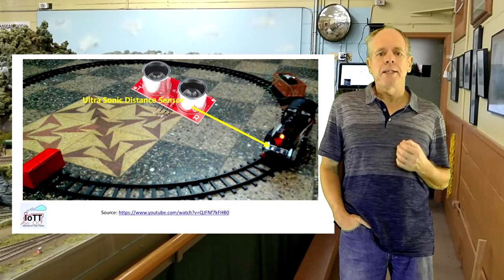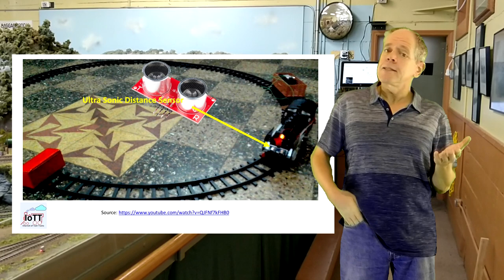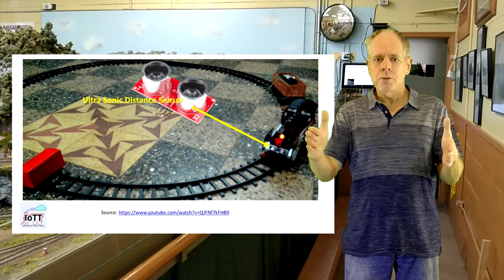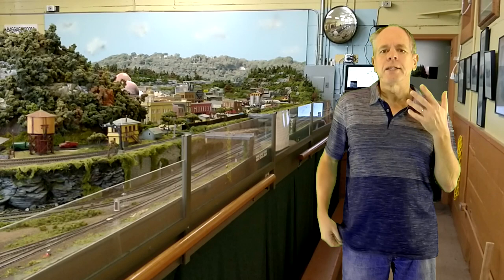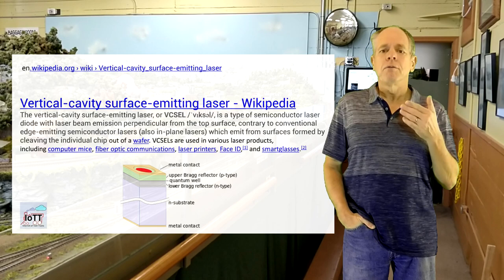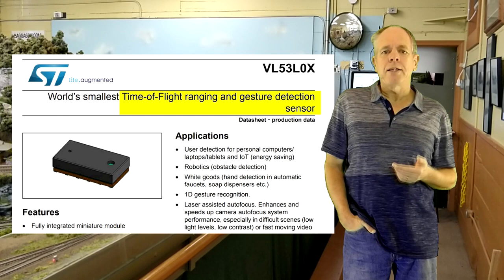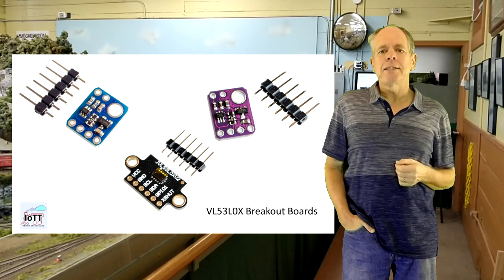If you search the internet, you will find a few examples where people are using ultrasonic detectors to detect obstacles in front of a train. Turning this around, we can have a stationary sensor that measures the distance to an approaching train. And instead of using an imprecise ultrasonic detector, I elected to use a VCSEL sensor, which stands for Vertical Cavity Surface Emitting Laser. This particular sensor, the VL53L0X, measures the time of flight of a laser beam from the sender to the obstacle and back and calculates the resulting distance.